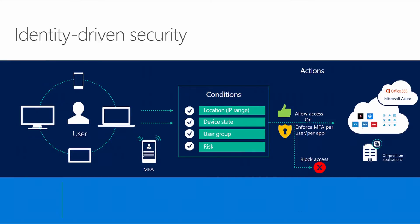Azure AD Premium Conditional Access is one of the key features for protecting identities in the cloud and hybrid environments. Conditional access allows you to look at certain conditions like location — being in an IP range, inside or outside the network. There's also a device state where the device could be registered, domain joined, or considered compliant. You can require users to be part of a certain group to access corporate resources, and also use a risk profile — for example, a Windows 10 PC not meeting the latest security assurance of having the latest Windows updates. You can use all these together or in combination to effectively control access to cloud and on-premises applications.